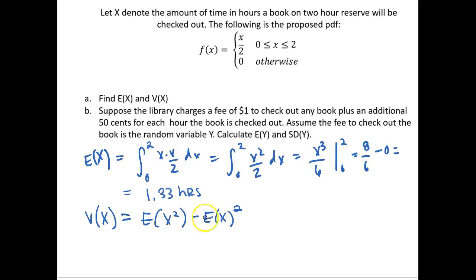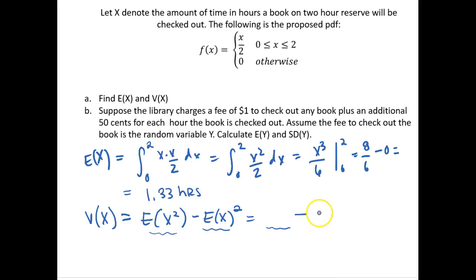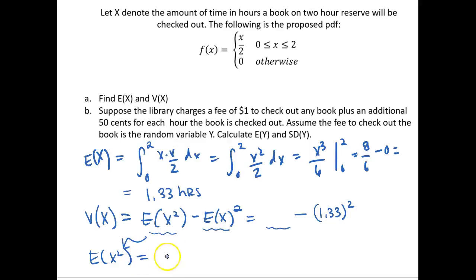We just calculated the expectation of x — it is 1.33. So we leave a placeholder and say: whatever E[x²] is, minus 1.33 squared. We need to calculate E[x²], which is the integral over the sample space of x² times our PDF.